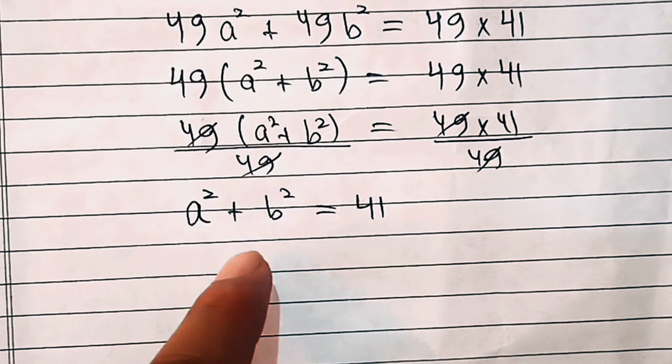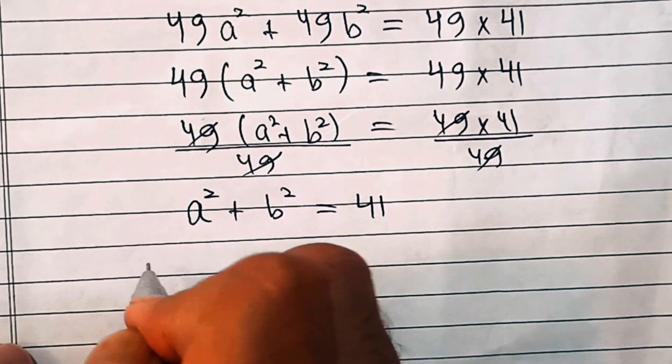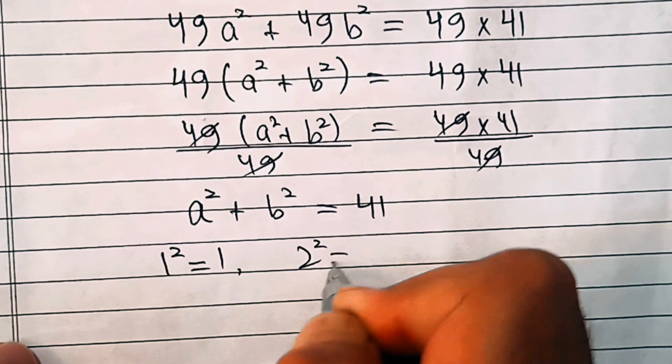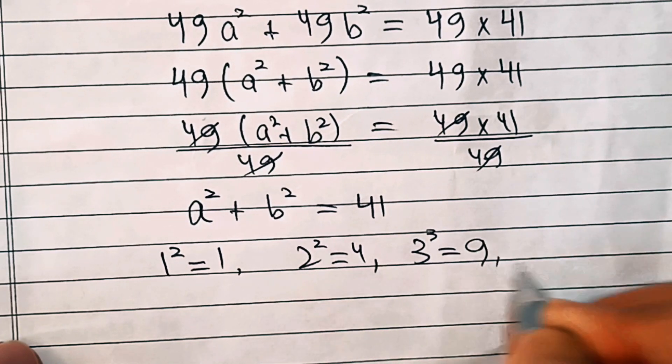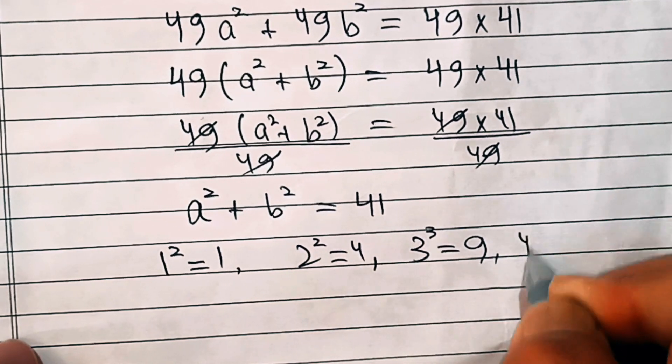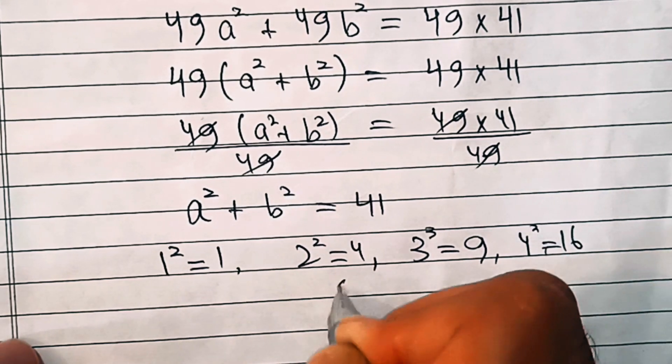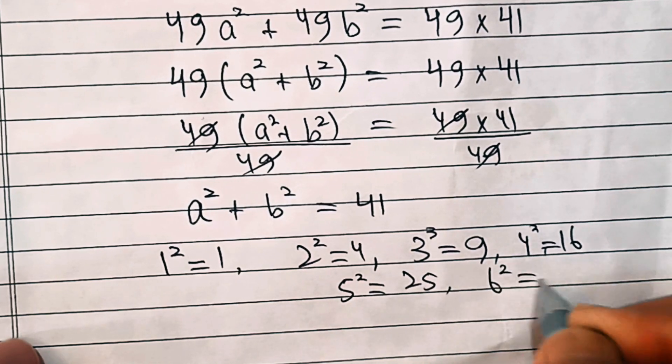So we'll find the two numbers whose sum of squares is 41. If we see, square of one is one, square of two is four, square of three is nine, square of four is 16, square of five is 25, and square of six is 36.